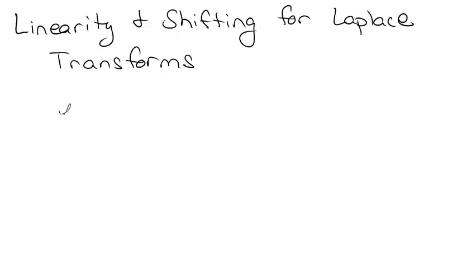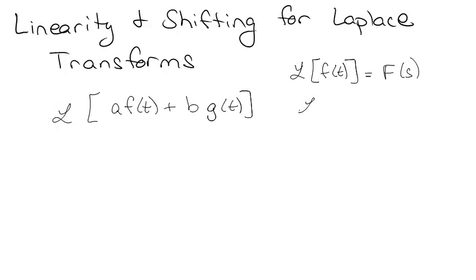So the linearity idea is say I'm trying to take the Laplace transform of some constant a times some function f(t), plus some other constant b times some other function g(t). We're also going to say that I happen to know the Laplace transform of f(t) is equal to some function F(s), and the Laplace transform of g is also equal to some function G(s).